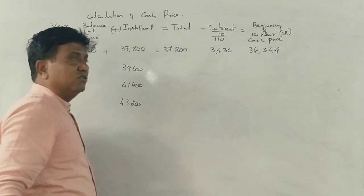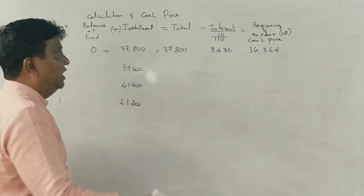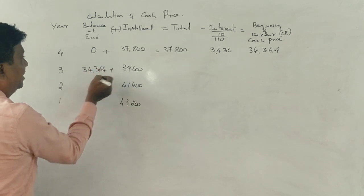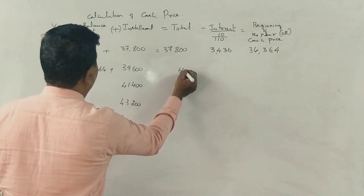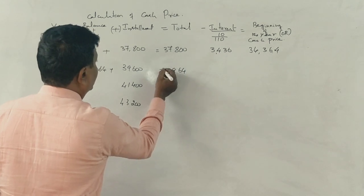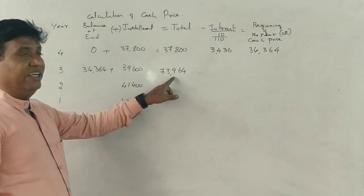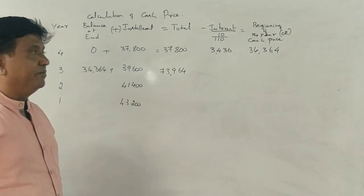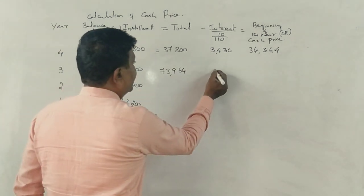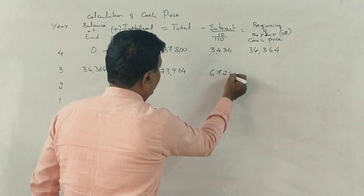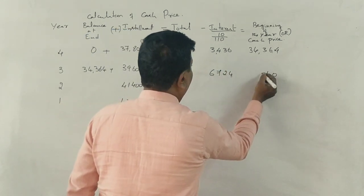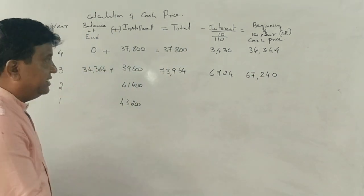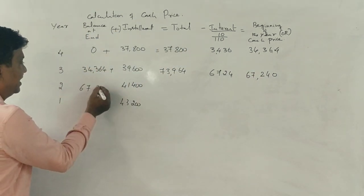34,364 plus the beginning amount, correct. That gives 73,964. Then 73,964 into 10 divided by 110 equals 67,240.